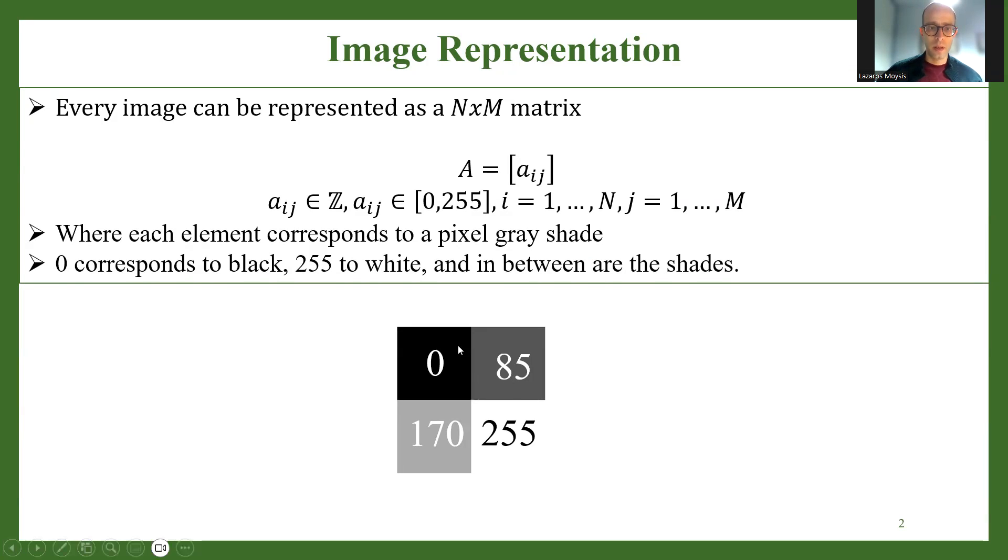Each of these values represents the grayscale of the specific pixel. I have some examples right here. So 0 corresponds to completely black, 255 which is the highest value corresponds to completely white. So there are 256 different values, and all the in-between values represent different shades. For example, 85 is somewhat dark gray, while 170 is a lighter gray.